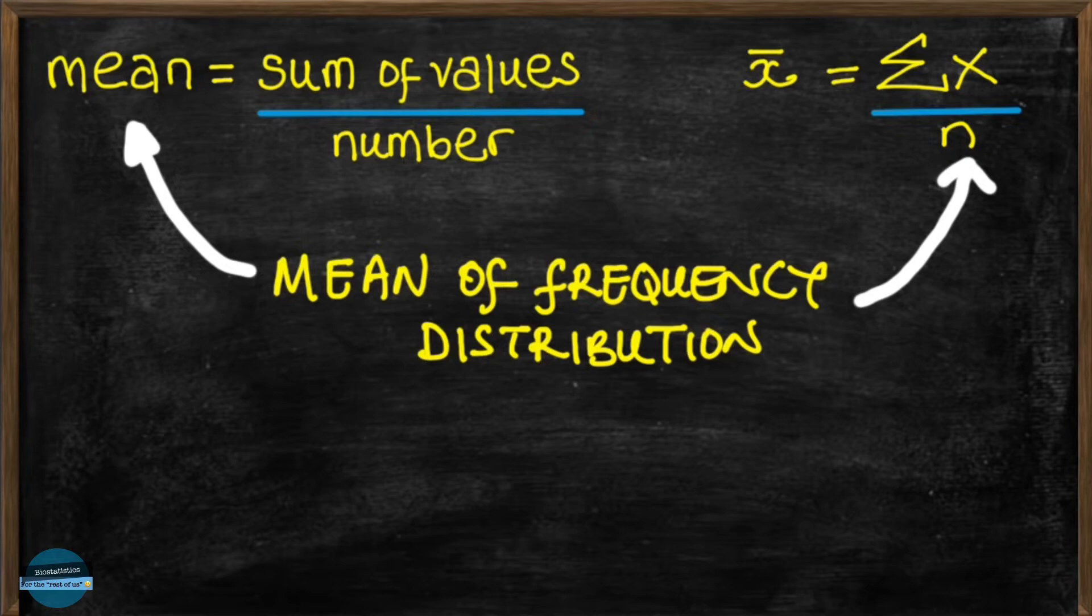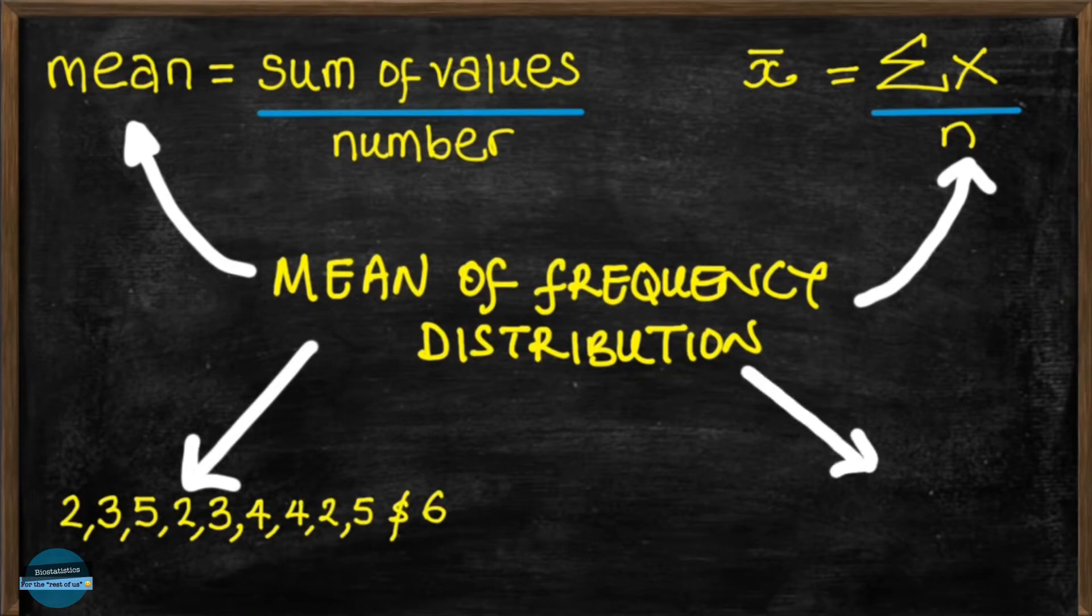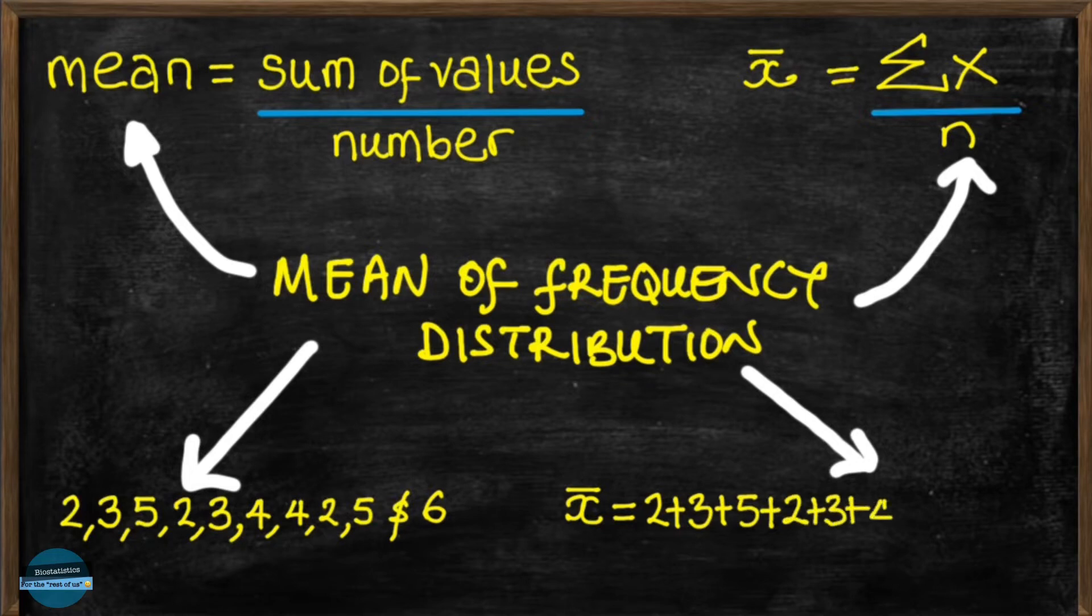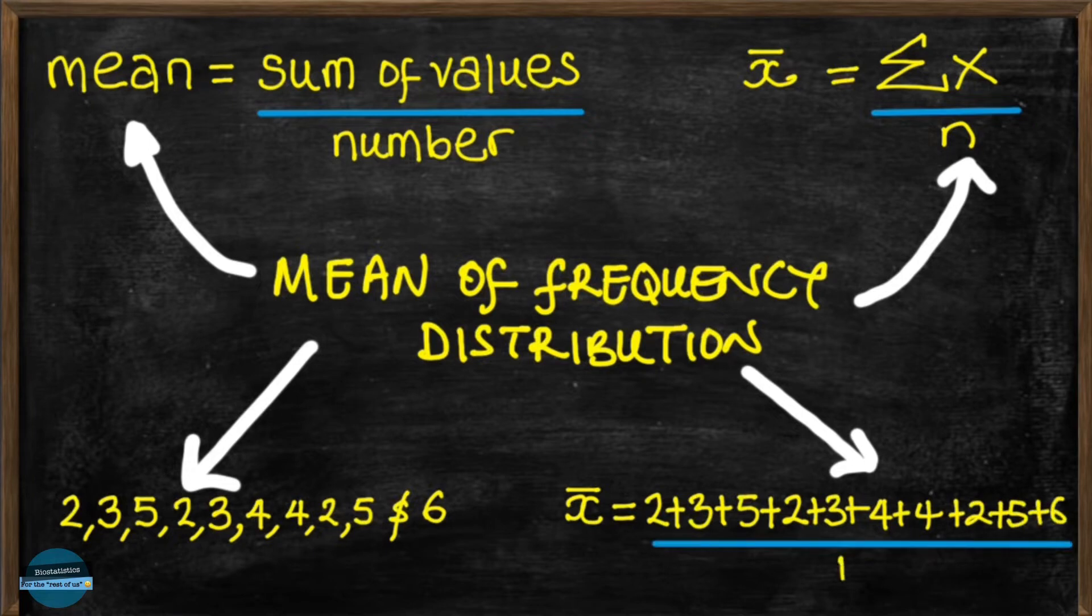So let's assume that we have a sample of the ages of 10 children in elementary school. Their mean age will be the sum of all the ages which is 2 plus 3 plus 5 plus 2 plus 3 plus 4 plus 4 plus 2 plus 5 and plus 6. And that's 36 all divided by 10 which is 3.6 years.